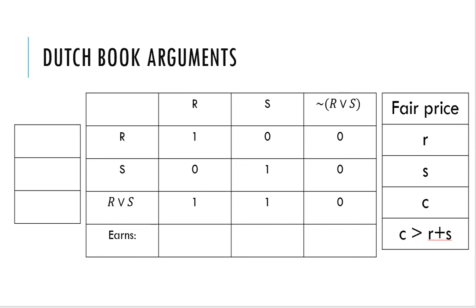Suppose I ask you for your fair prices on all three gambles — R, S, and R-or-S. You give me little r as your fair price for R, little s as your fair price for S, and C as your fair price for R-or-S. Now suppose that C is not equal to r plus s — because C equals r plus s would be additivity. Let's suppose instead that C is greater than r plus s, meaning your fair price for R-or-S is greater than the sum of your fair prices for R and S separately. We're going to show this leads to a Dutch book — senseless behavior — if you set your fair prices this way.